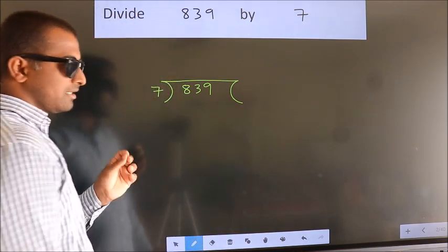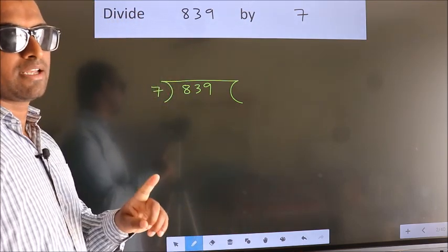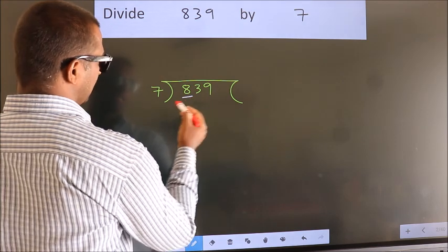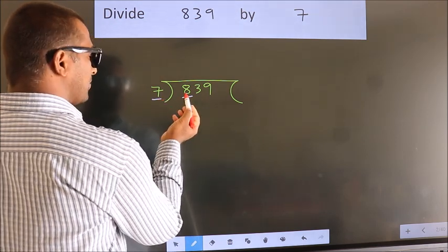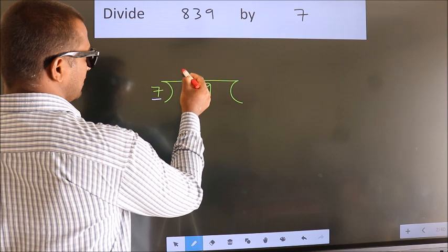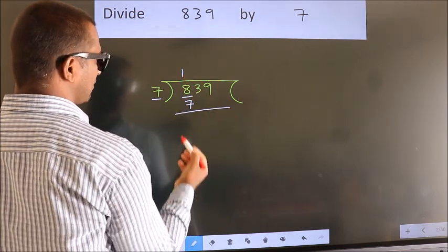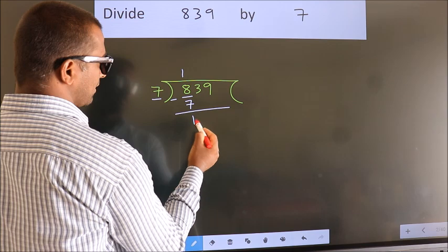This is your step 1. Next. Here we have 8, here 7. A number close to 8 in 7 table is 7 once 7. Now we should subtract. We get 1.